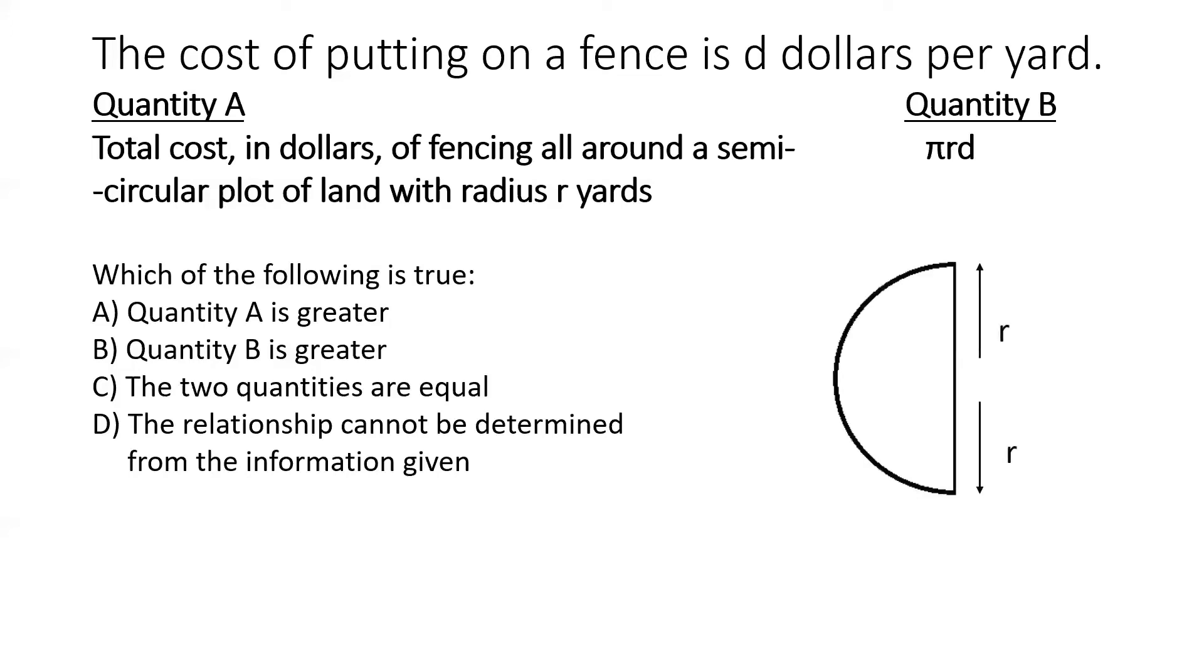So let's draw this semicircular plot of land first. So this is a semicircle. The radius is R. Now, the curved portion of the semicircle, that circumference of the curved portion of the semicircle would be essentially half the circumference of the whole circle. And we know that the circumference of the whole circle is 2 pi R. So the perimeter of the circumference of just that curved portion of the semicircle is pi R.